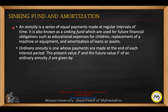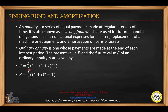Ordinary annuity is one whose payments are made at the end of its interest period. The present value P and the future value F of an ordinary annuity A are given by the following formulas. If you are given the principal value, the formula will be the annuity A divided by I, times 1 minus 1 plus I raised to negative N, where I is J over N. For the future value, that will be A over I times the quantity 1 plus I raised to N, minus 1.